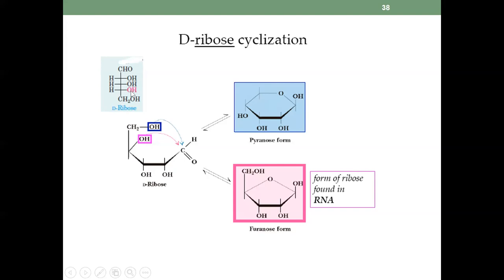The OH on the fourth carbon — the pink one — attacks the carbonyl carbon. The electrons from the OH attack the carbon. When it attacks, the double bond goes to oxygen, and oxygen gets hydrogen from water, giving an OH. When this happens, the oxygen with three bonds must eliminate hydrogen to become stable. You will form a five-membered ring — the furanose — with four carbons involved and the oxygen as the fifth ring atom.